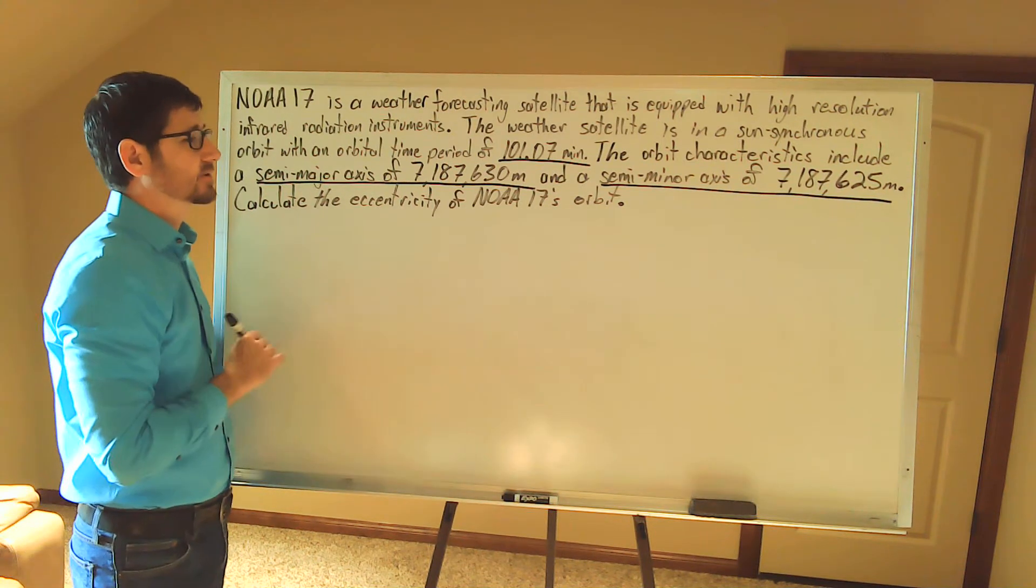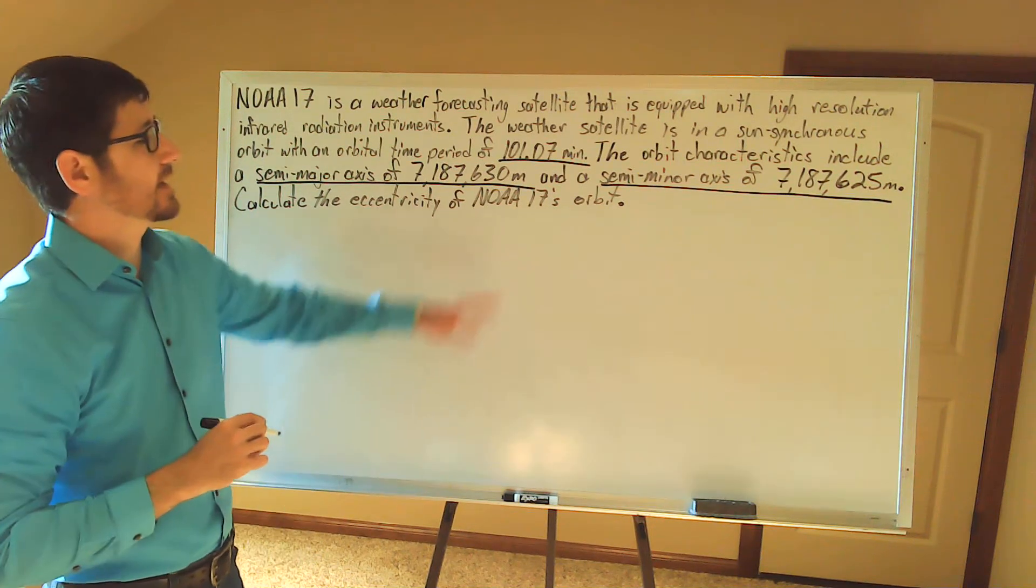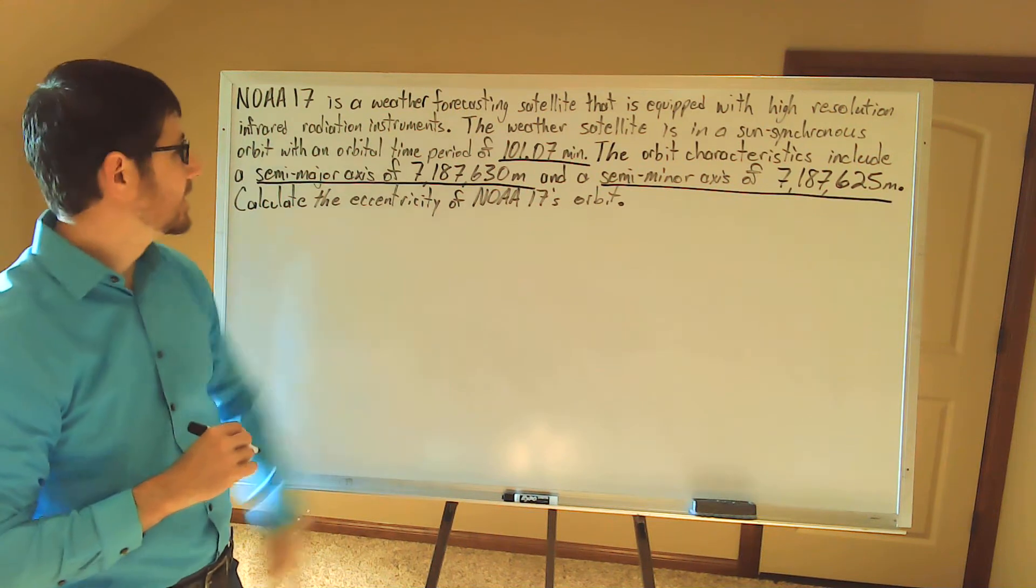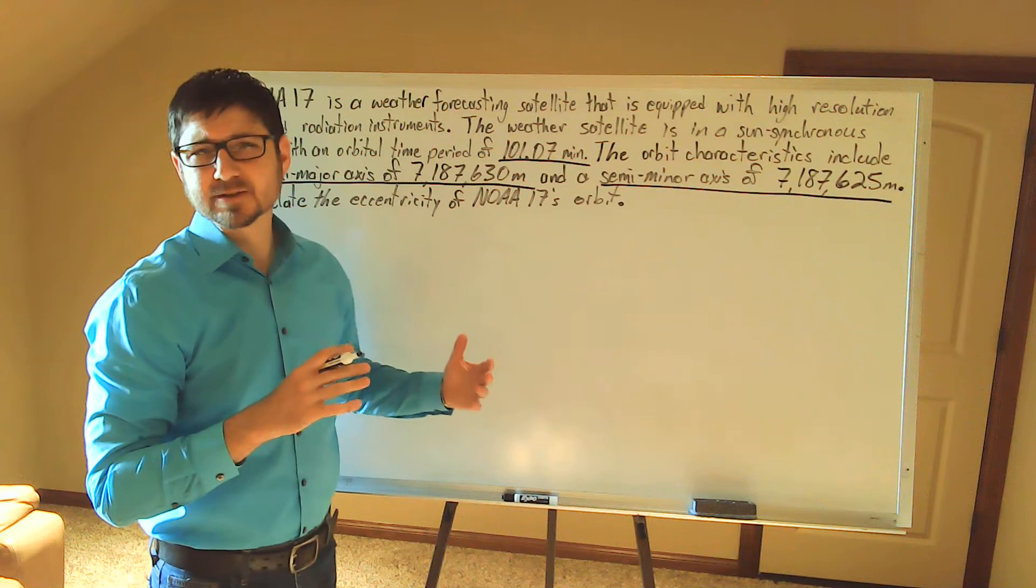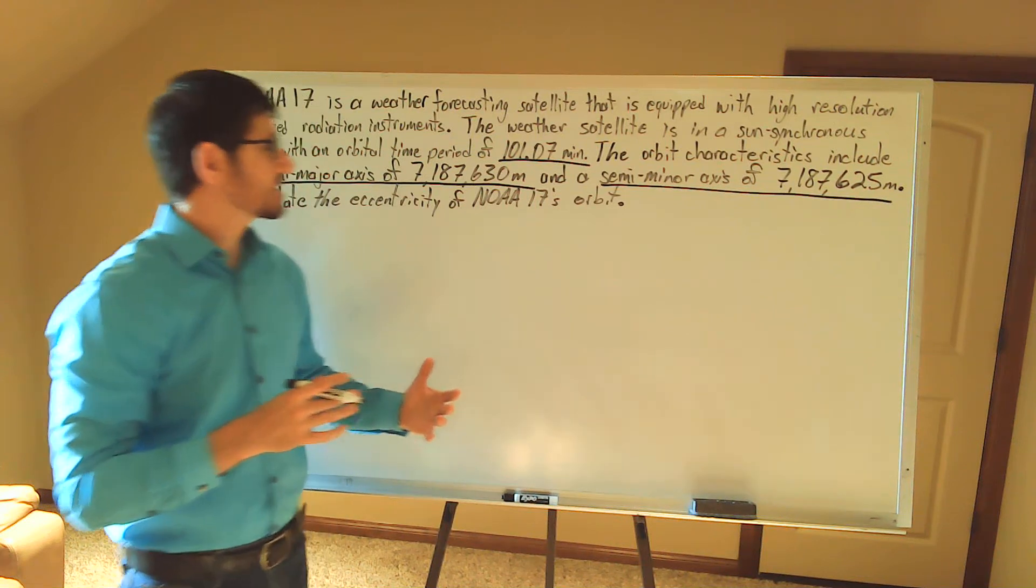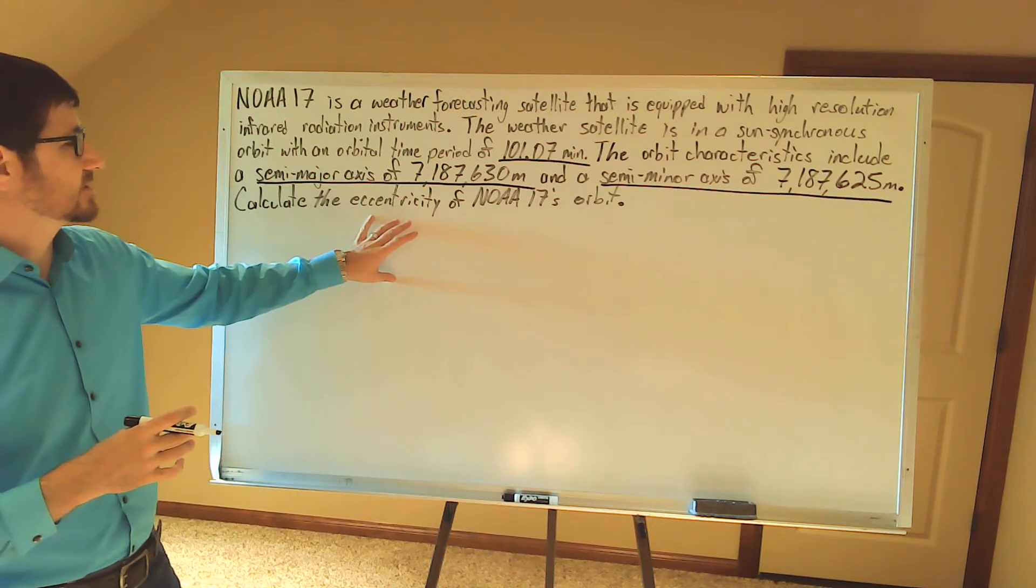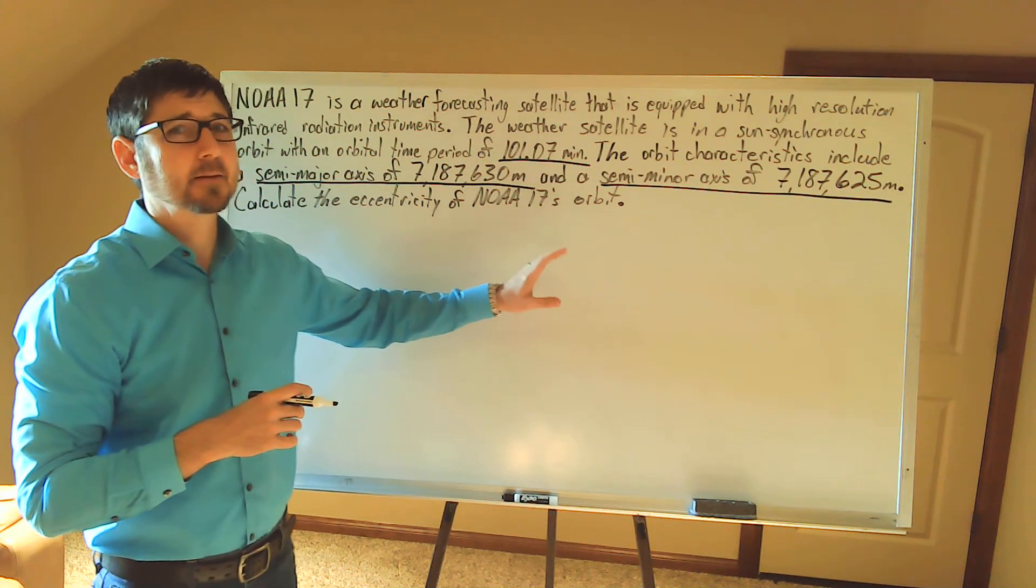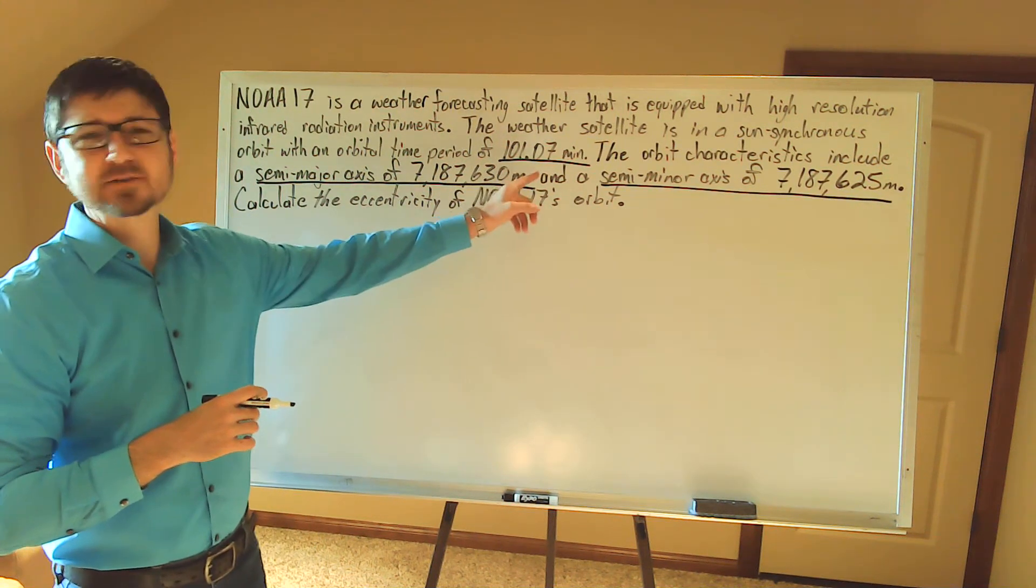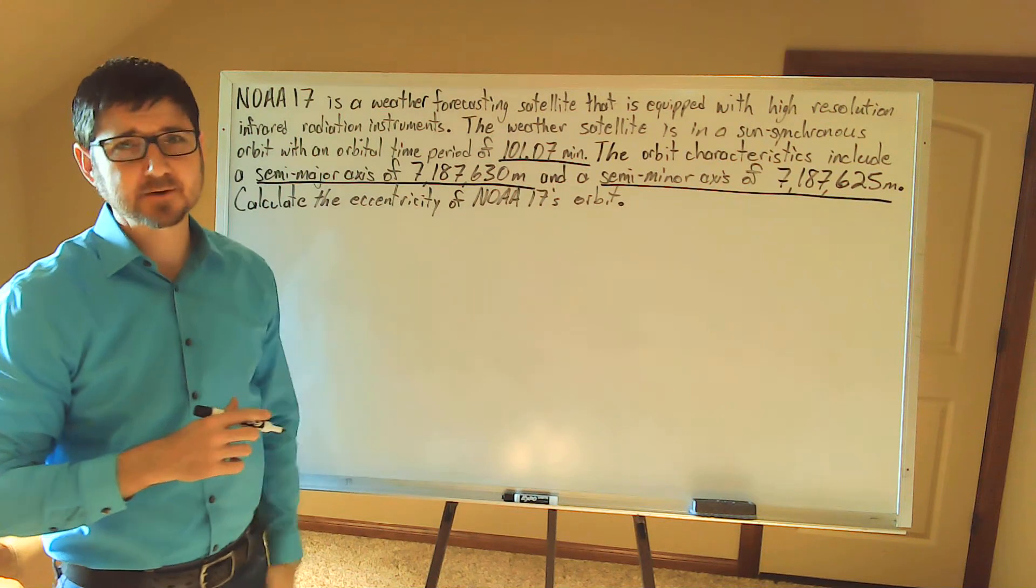Calculate the eccentricity of NOAA 17's orbit. It looks like they gave us some information that we really didn't need. So we're going to calculate the eccentricity based off of the semi-major and semi-minor axis. We really don't need the orbital time period.